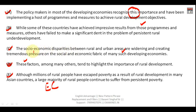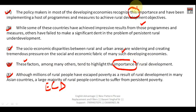So E and C form a mandatory pair. Next, sentence D says 'these factors' — 'these' refers to the factors just discussed. Because of these factors, rural development is not taking place effectively. After E and C, we place sentence D: 'These factors among many others tend to highlight the importance of rural development.'